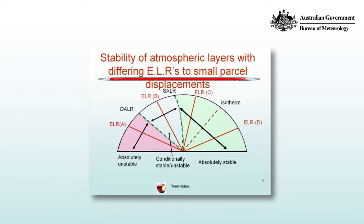That's best shown graphically. Here we have four different lapse rates, A through D, along with a dry adiabat, a saturated adiabat, and an isotherm. Consider environmental lapse rate A — this is absolutely unstable because it doesn't matter whether you lift a parcel that's dry or saturated. As it rises along those lapse rates, it's going to be warmer than the environment, and therefore the buoyancy force is upwards, so it's unstable.